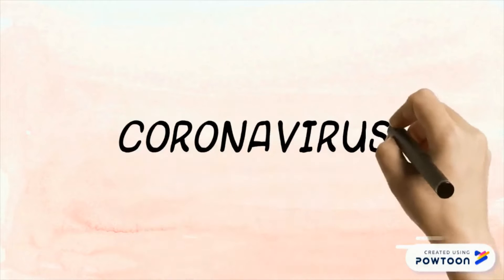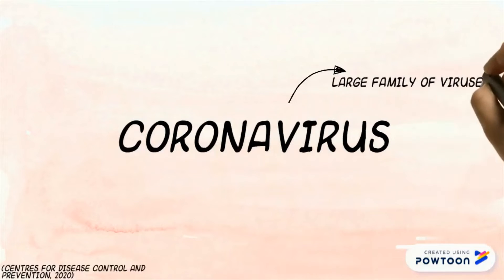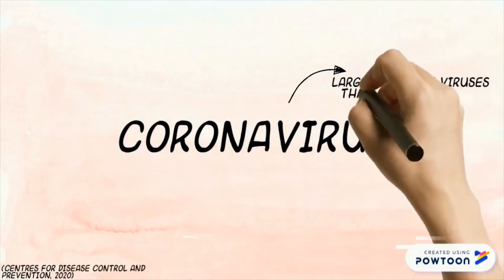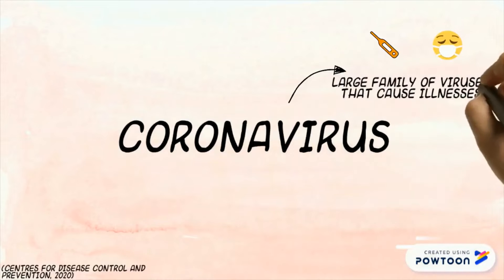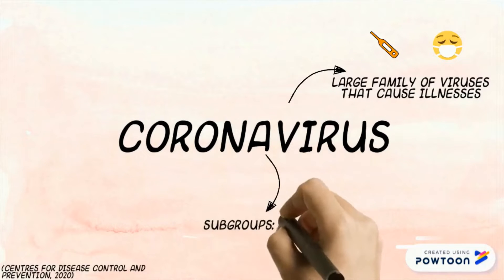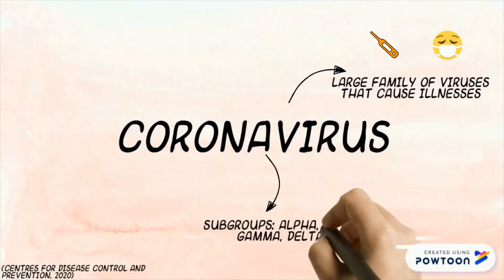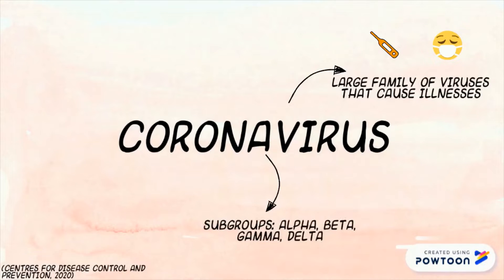Coronaviruses are a large family of viruses that cause illnesses. There are four main subgroupings of the virus: Alpha, Beta, Gamma, and Delta.